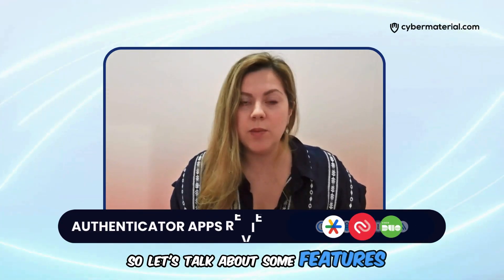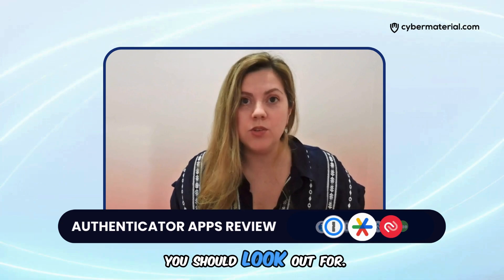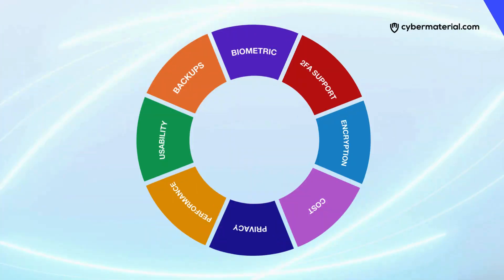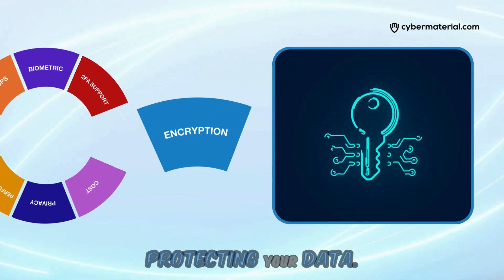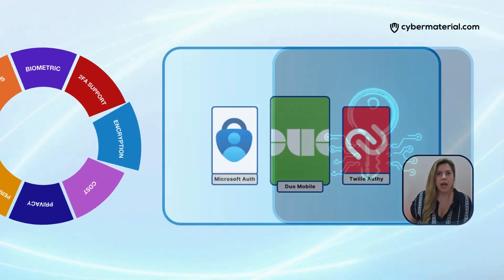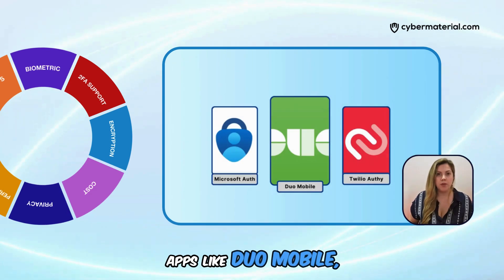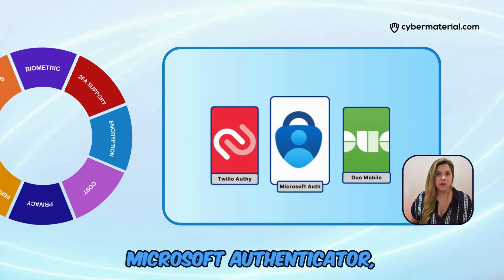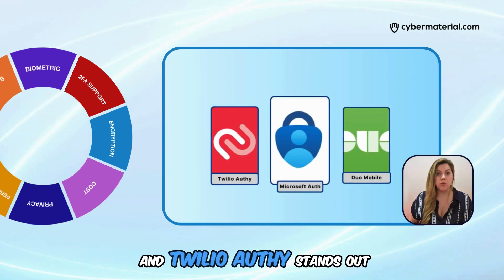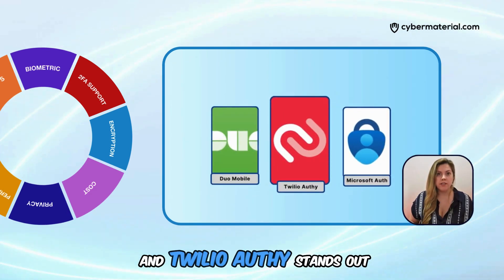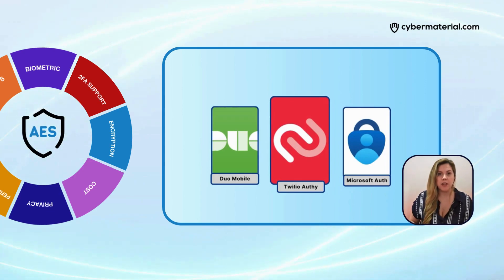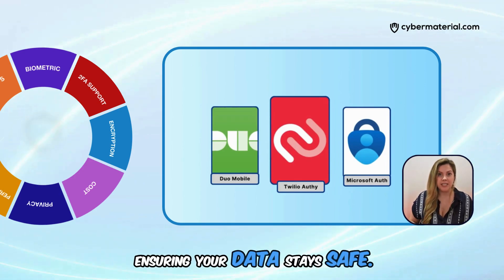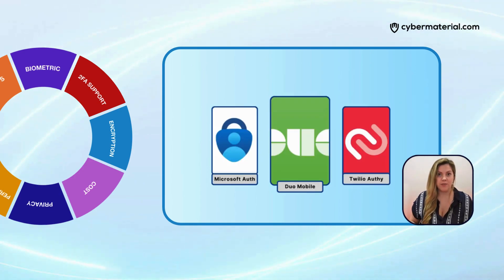So let's talk about some features you should look out for. Encryption is crucial in protecting your data. Apps like Duo Mobile, Microsoft Authenticator, and Twilio Authy stand out with AES encryption, ensuring your data stays safe.